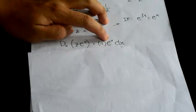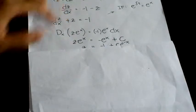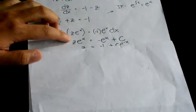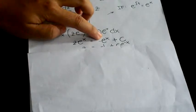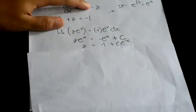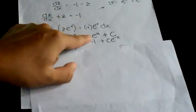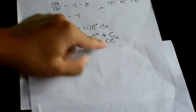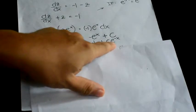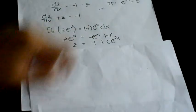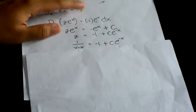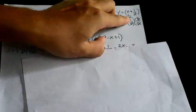The derivative of z times e to the x is equal to negative 1 times e to the x. Differentiate both sides and you will get z times e to the x is equal to negative e to the x plus c. Divide both sides by e to the x and you will get z is equal to negative 1 plus c times e to the negative x.